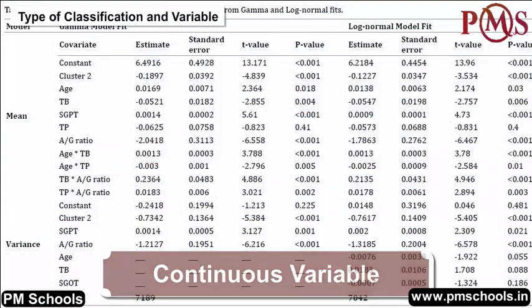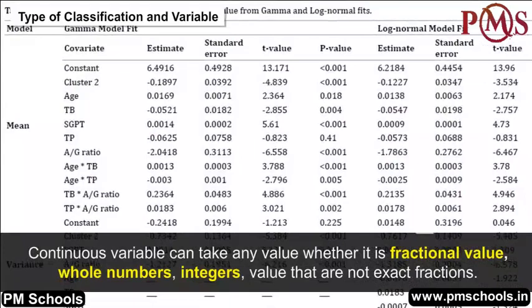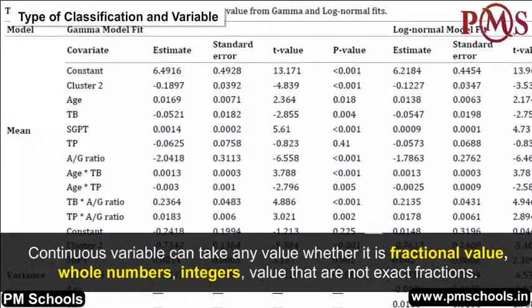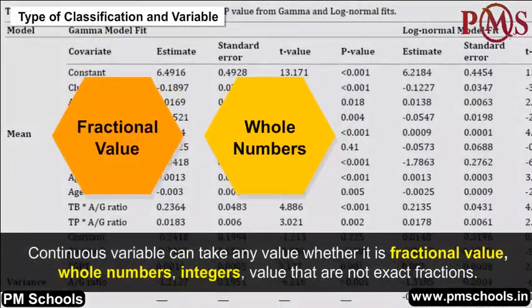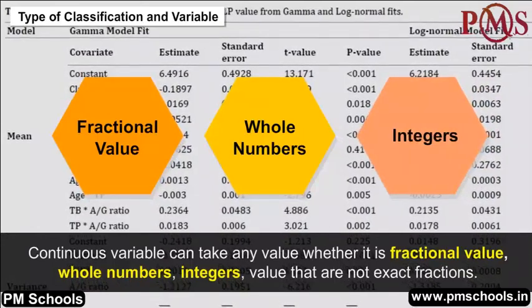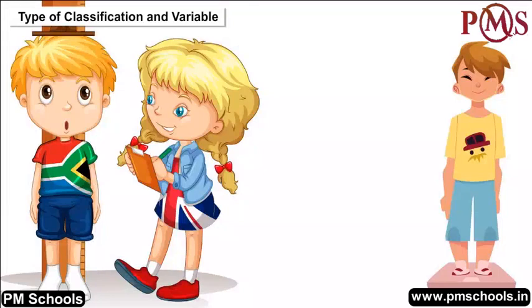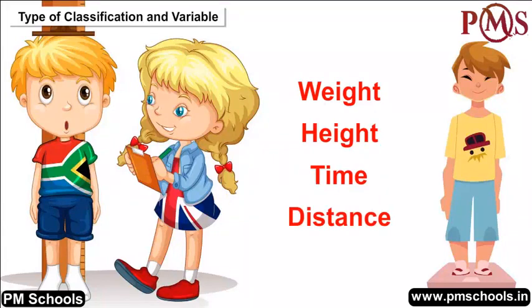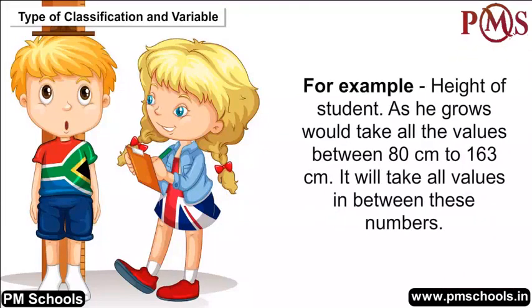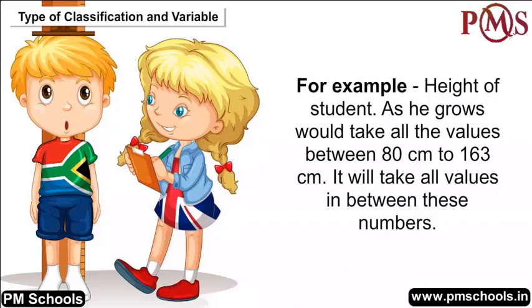Continuous variable: A continuous variable can take any value — whether fractional values, whole numbers, integers, or values that are not exact fractions. Examples of continuous variables are weight, height, time, and distance. For example, the height of a student as he grows would take all values between 80 cm and 163 cm, including all values in between those numbers.